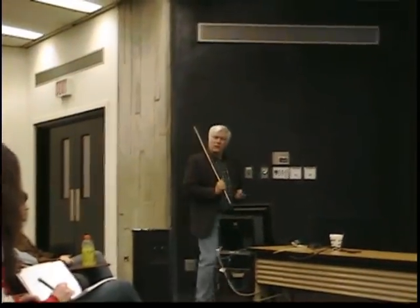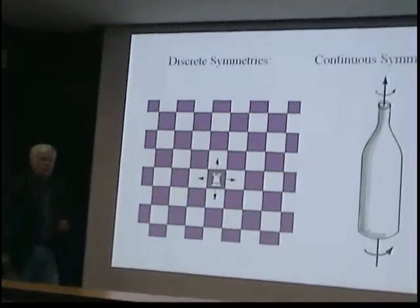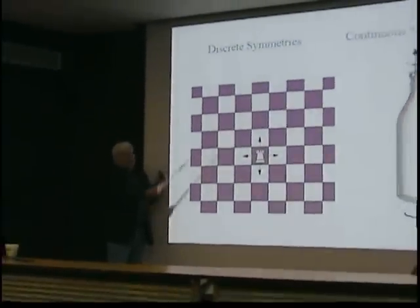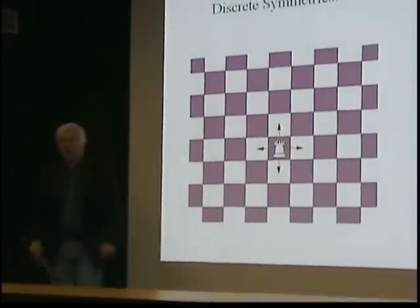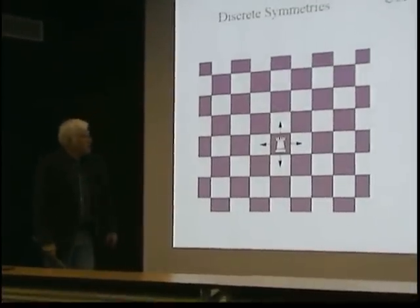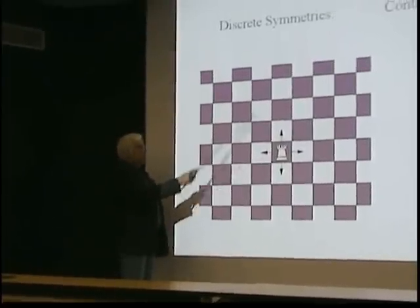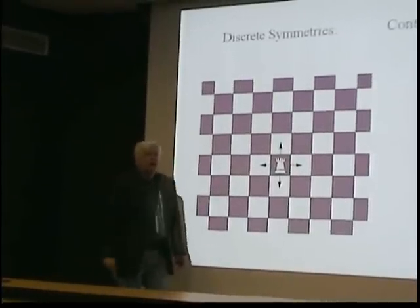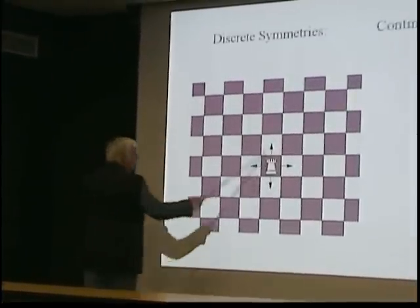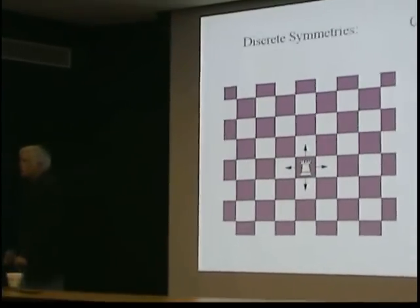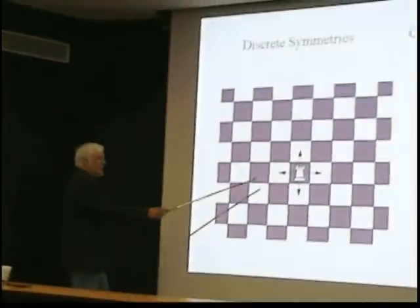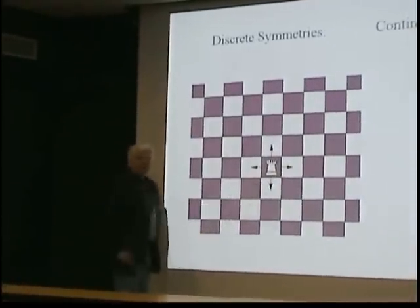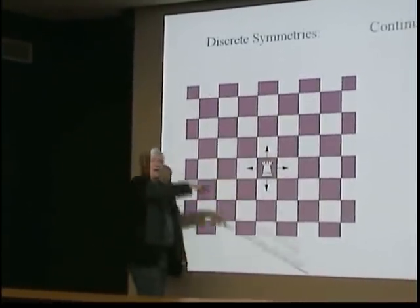If you want an example of discrete symmetry, think of an infinite chess board. This board goes off a billion light years that way, a billion light years that way, and so forth. There's a rook sitting on a square. The rook looks around and says — setting aside the colors of the squares — this is a mighty symmetrical universe. Because if I take one step to the right, it looks exactly the same. If I take 10 steps to the right and five steps up, it looks exactly the same. So that rook is living in a very symmetrical world.